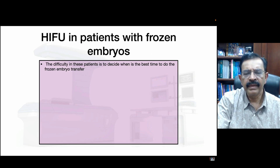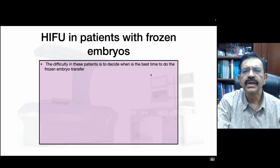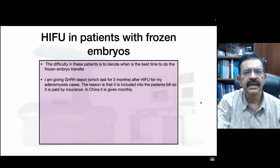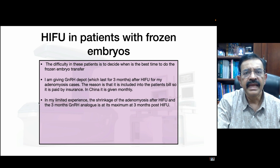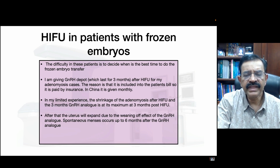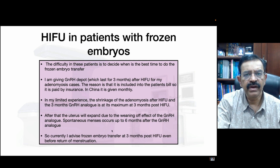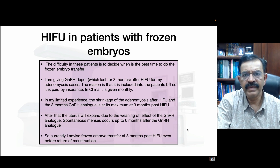The key question for HIFU patients with frozen embryos is: when is the best time to do the frozen embryo transfer? I give GnRH analogue for three months after HIFU for adenomyosis patients. In my experience, the shrinkage of adenomyosis at three months post-HIFU is maximum, and this may be the best time to perform frozen embryo transfer. After that, the uterus expands due to the weaning effect of GnRH analogue, with spontaneous menses usually returning around six months. So I currently advise frozen embryo transfer at three months post-HIFU, even before return of menstruation.